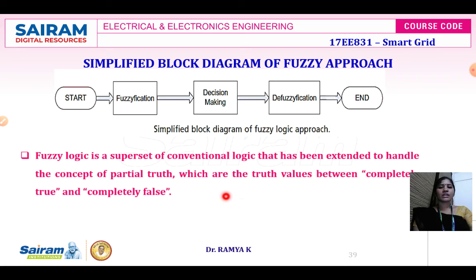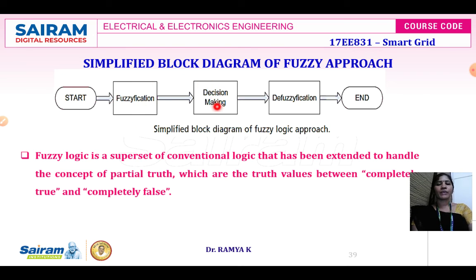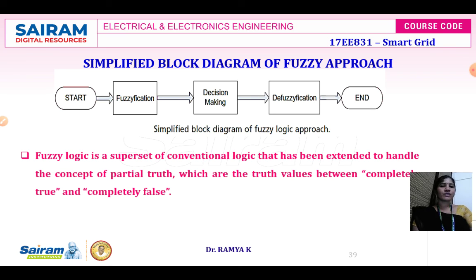Next is the fuzzy approach. First, fuzzification has to be done — framing the membership function for input and output, which could be sigmoidal, triangular, or sinusoidal. After fuzzification, a rule-based decision making system is applied. Then it has to be defuzzified for the end user to understand. Fuzzy logic is a superset of conventional logic extended to handle partial truth — values between completely true and completely false — giving an output of either true or false, zero or one. These expert intelligence systems — ANN, expert systems, and fuzzy logic — are incorporated in smart grid to get a perfect optimal solution under power system operation.